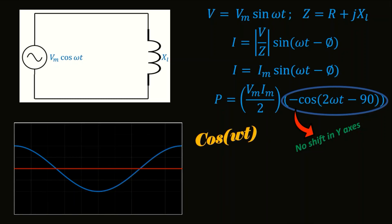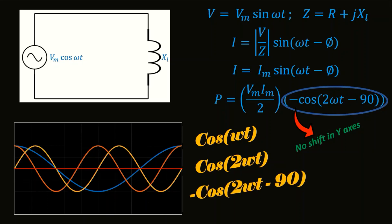For cos ωt, it will be the blue graph. For twice the frequency, it will again be two cycles. And then the negative and shifted cos function will look like the yellow curve.